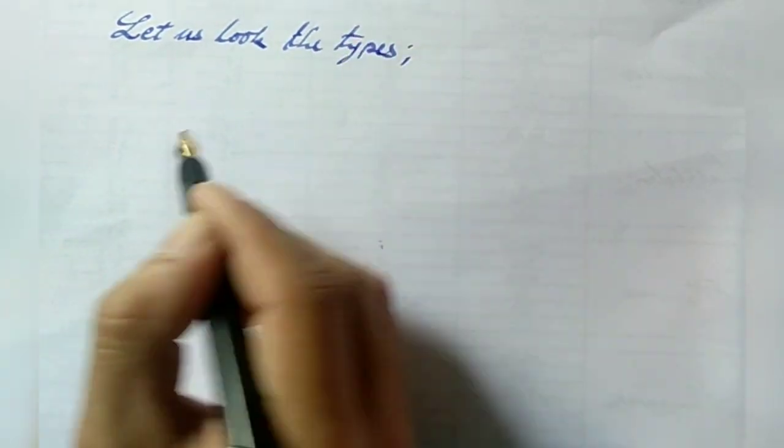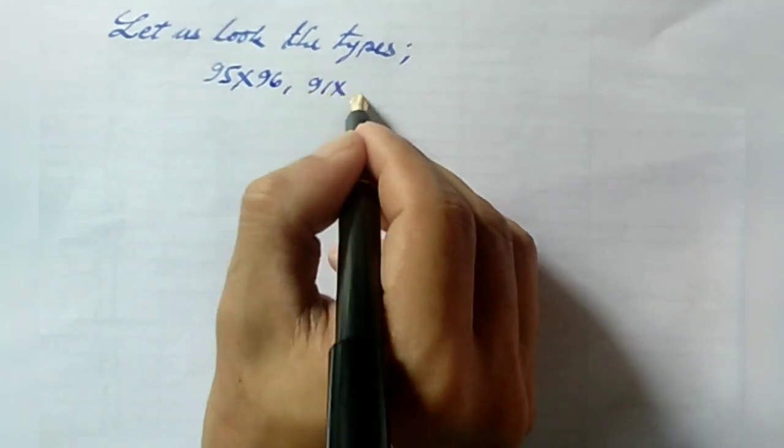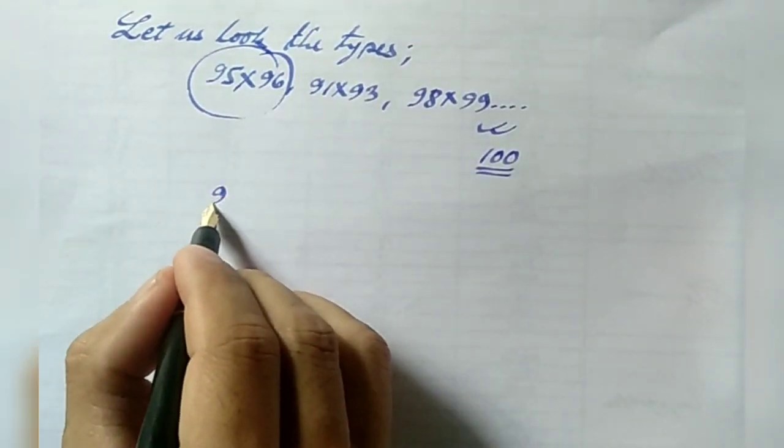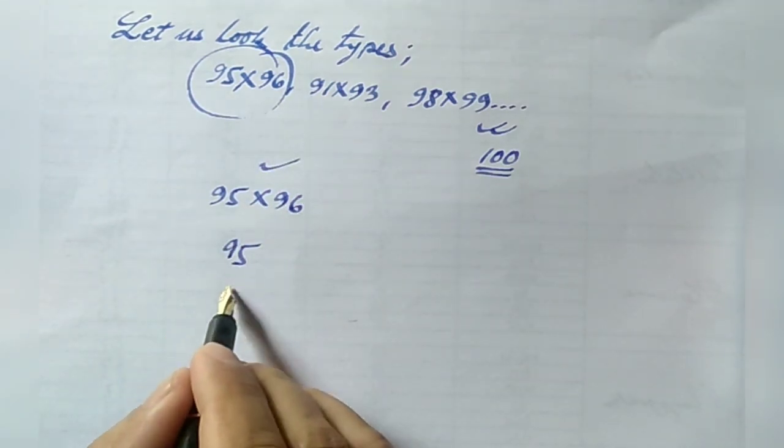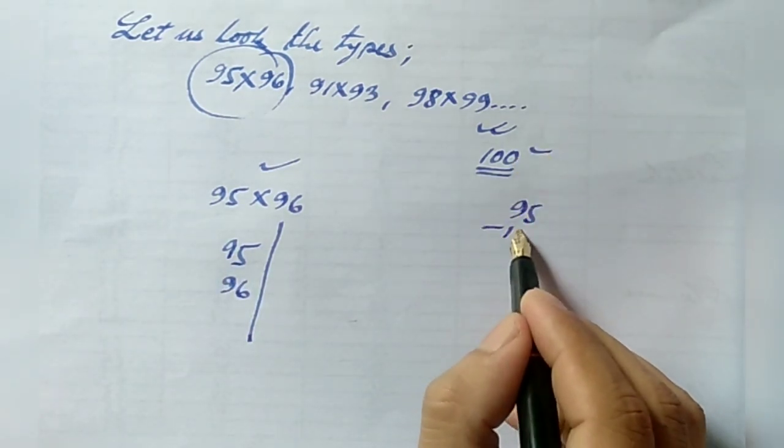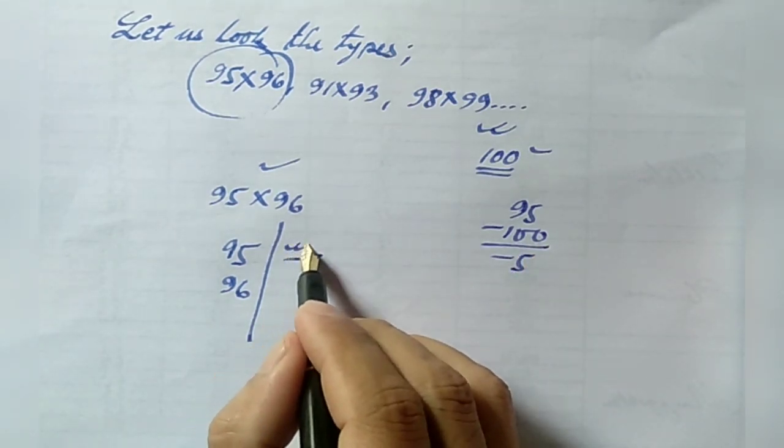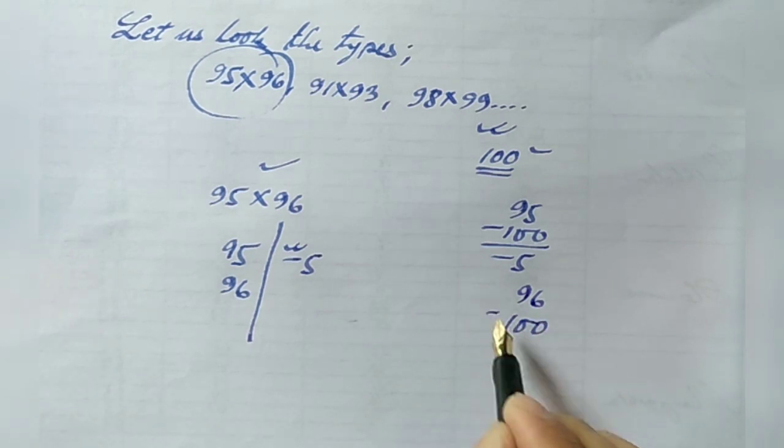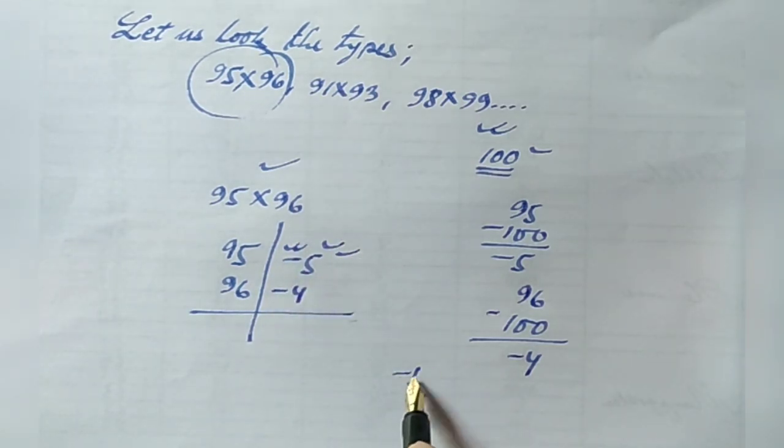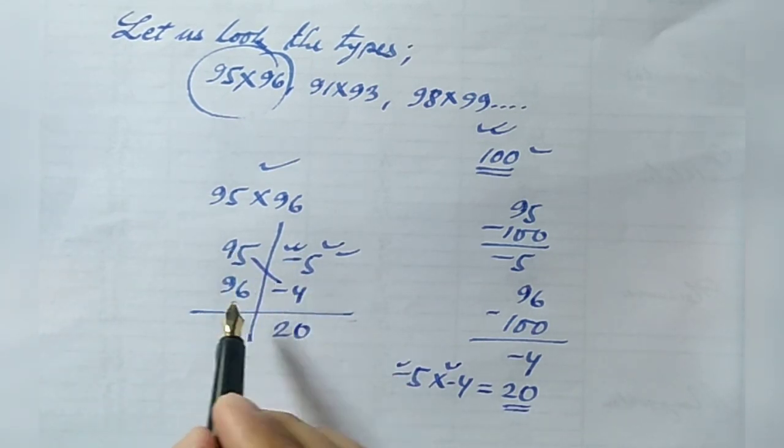Let us have a look at another type of numbers like 95 into 96, 91 into 93, 98 into 99. This type of number is near 100. So let us take 95 into 96. This 95 is near 100, so let us subtract 100 from 95, we will get minus 5. Likewise, let us take 96 and subtract from 100, then we will get minus 4. Now let us multiply minus 5 and minus 4. Minus 5 into minus 4 gives us positive 20, so this 20 should be written here. Then let us subtract 95 and 4, or we can do 96 minus 5, the answer is 91. Therefore, the product of 95 into 96 gives us 9120.